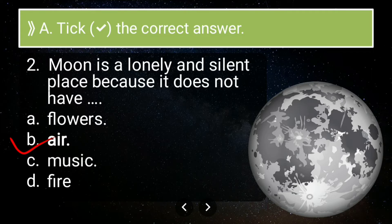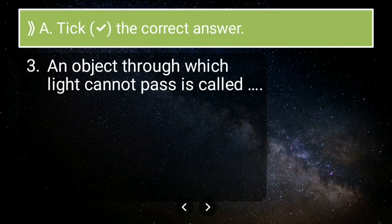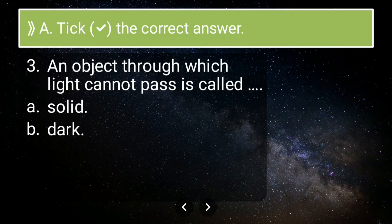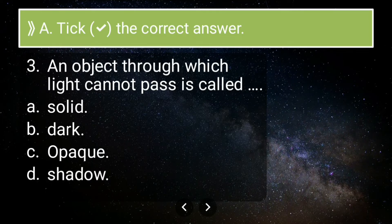Third question: an object through which light cannot pass is called — solid, dark, opaque, or shadow? An object through which light cannot pass is called an opaque object. The correct option is C, opaque. Opaque means not transparent, so light cannot pass through objects that are opaque in nature.